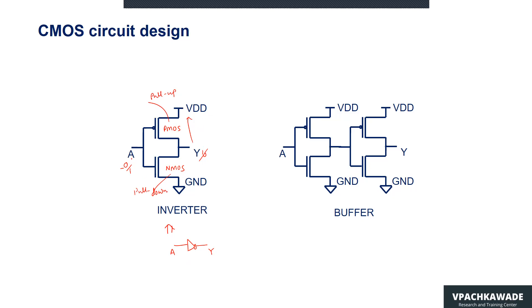When the input is at logic 1, NMOS is switched on and PMOS is switched off, and the output will be pulled down to logic 0, that is ground. That is how it performs the operation of the CMOS inverter.